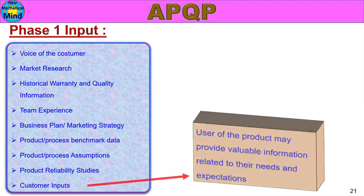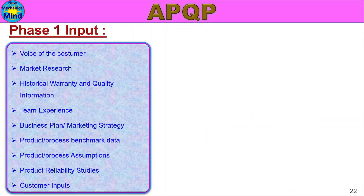Customer Inputs: the user of the product may provide valuable information related to their needs and expectations. The customer is who has produced the product, but the user is the one who uses the final product. They are the warranty claimants. From the user, we can get valuable input on their needs and expectations.